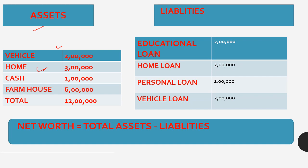You have a vehicle worth 2,000,000 rupees. You have a house worth 3,000,000 rupees. You have some cash worth 1,000,000 rupees. You have a farmhouse worth 6,000,000 rupees. So the total assets you have are 12,000,000 rupees — whatever you own.